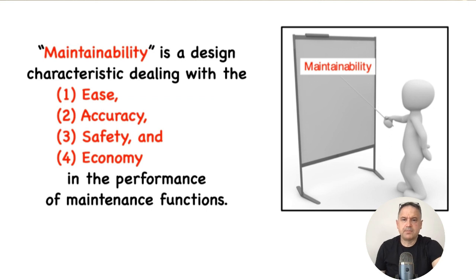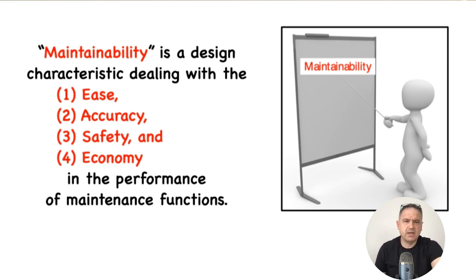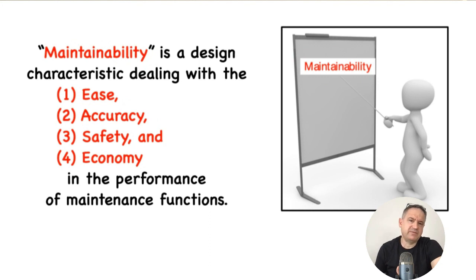My friends, when we say maintainability, we talk about four parameters — four characteristics. These are: ease of maintenance, accuracy of maintenance, safety of maintenance, and economy of maintenance. If we check all those four parameters, then we are good to go on the maintenance issue.